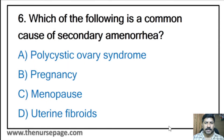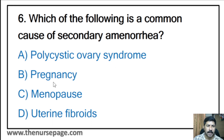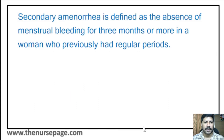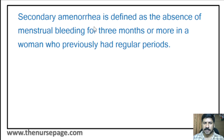Sixth question: Which of the following is a common cause of secondary amenorrhea? Polycystic ovary syndrome, pregnancy, menopause, or uterine fibroids? The correct answer is pregnancy. Secondary amenorrhea is defined as the absence of menstrual bleeding for three months or more in a woman who previously had regular periods.